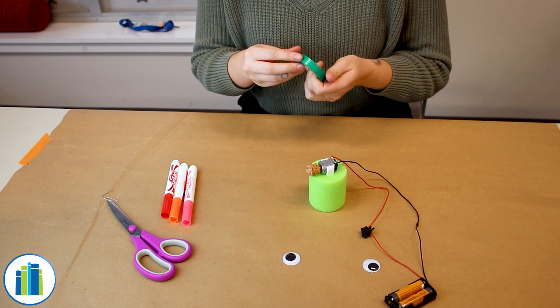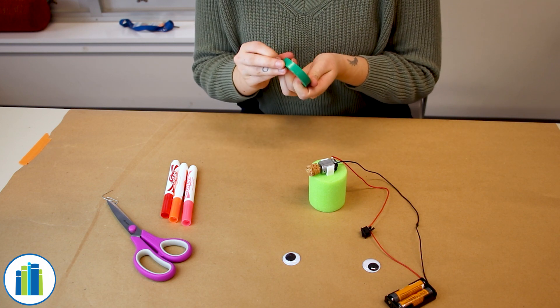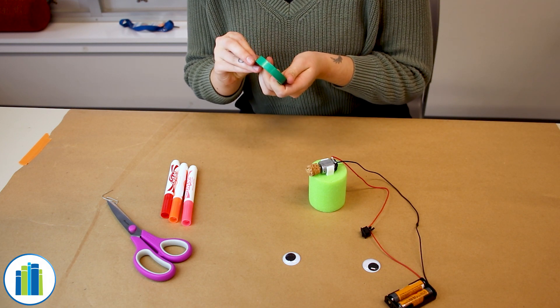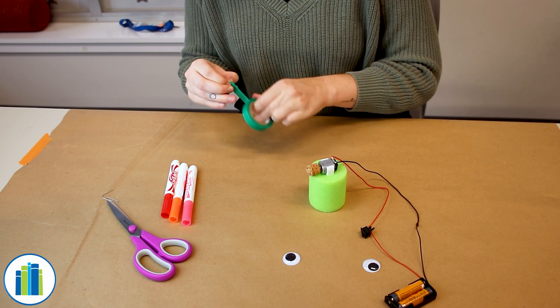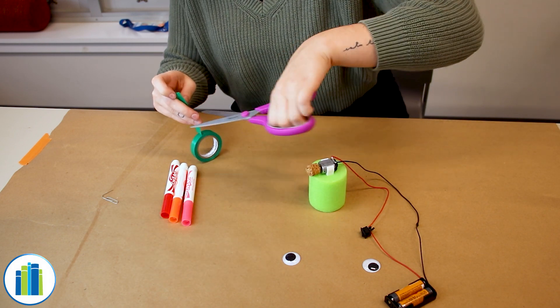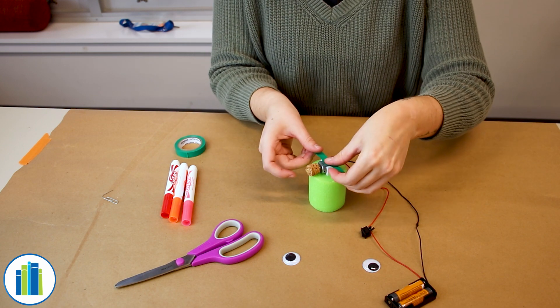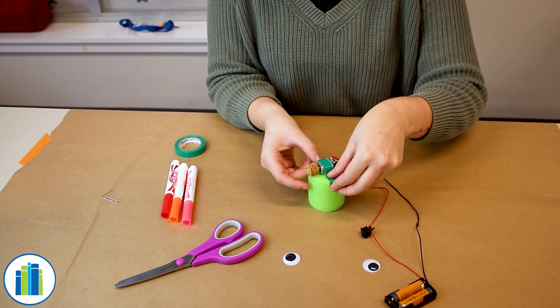You want to make sure that the cork is not smashed into the pool noodle too much. You want it to kind of rest above it, and then you're going to take the electrical tape and just kind of secure it in there. You'll need your scissors to cut the electrical tape and then just kind of tape it on.